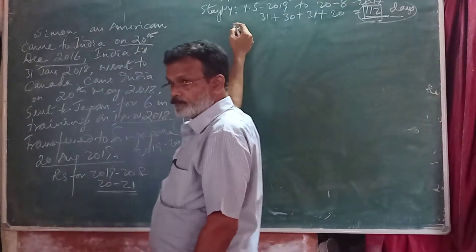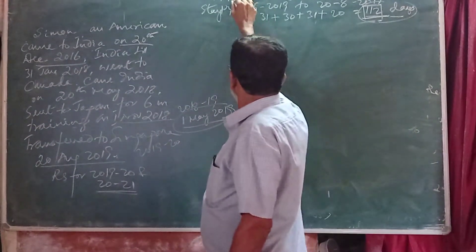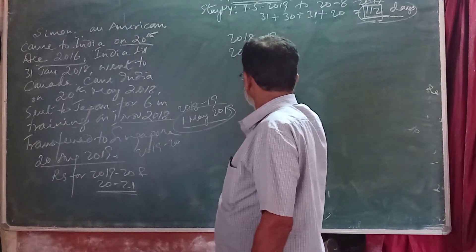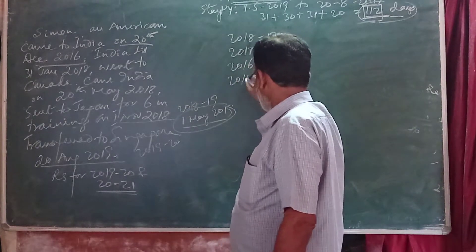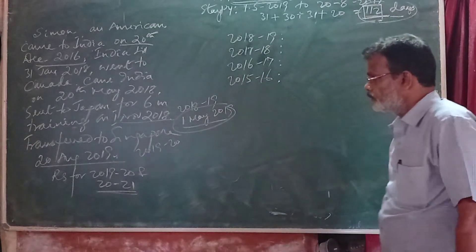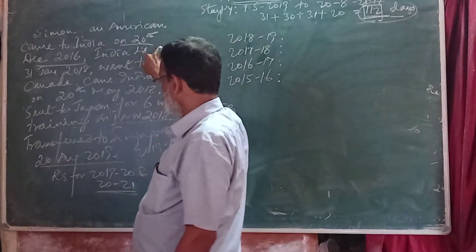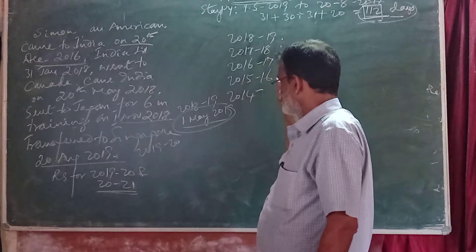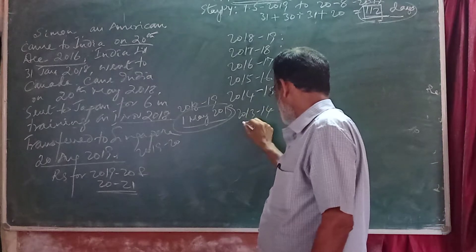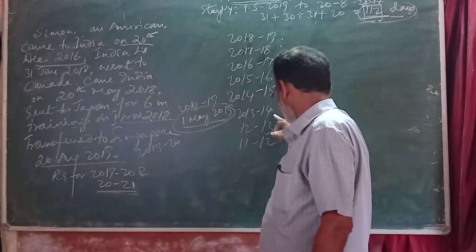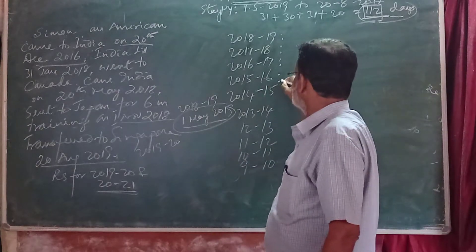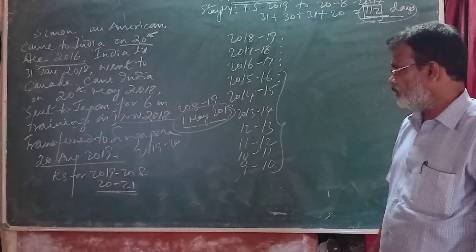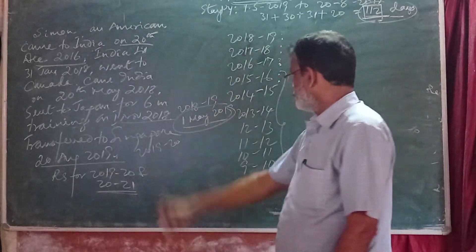Whether he was in India during the 4 preceding previous years for 365 days or more needs to be checked. The 4 preceding previous years relevant to 2019-20 are 2018-19, 2017-18, 2016-17, and 2015-16. Simon, an American, came to India for the first time on 20th December 2016, that means in the previous year 2016-17. Earlier to that, he was in America and was not in India.